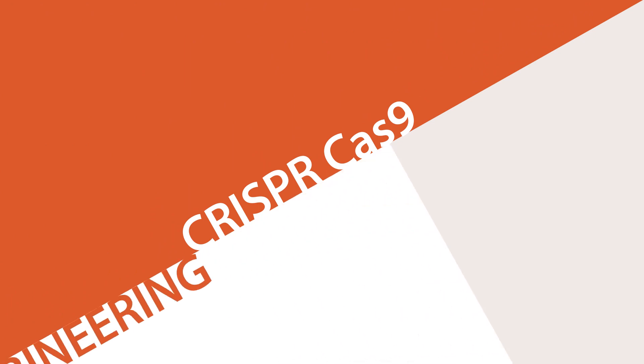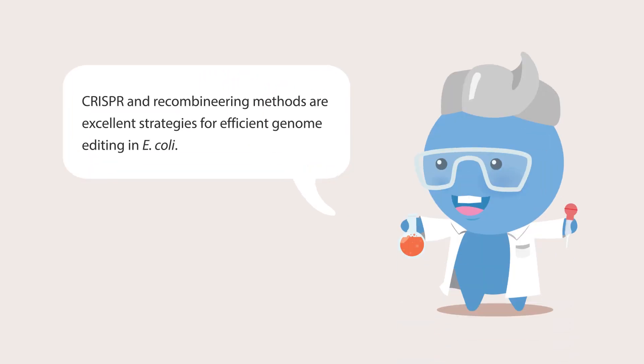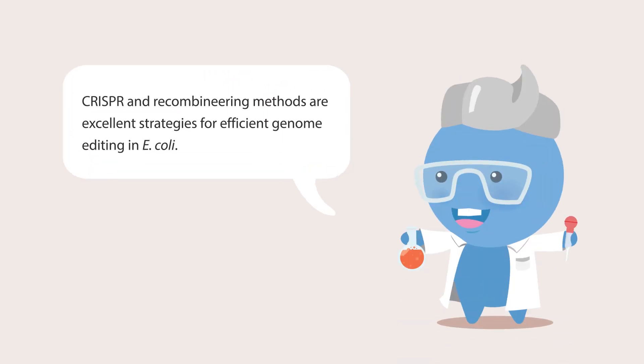Using CRISPR-Cas9 coupled with Lambda-RED recombineering technology, scientists have been able to achieve editing efficiencies from 65% to close to 100%, making this method an excellent strategy for efficient genome editing in E. coli.